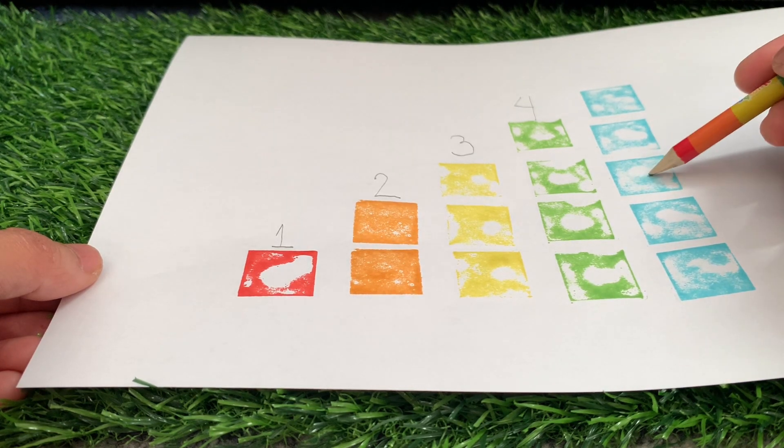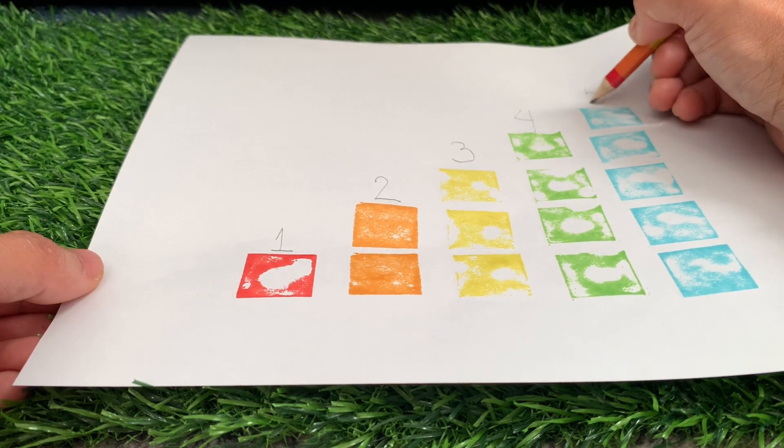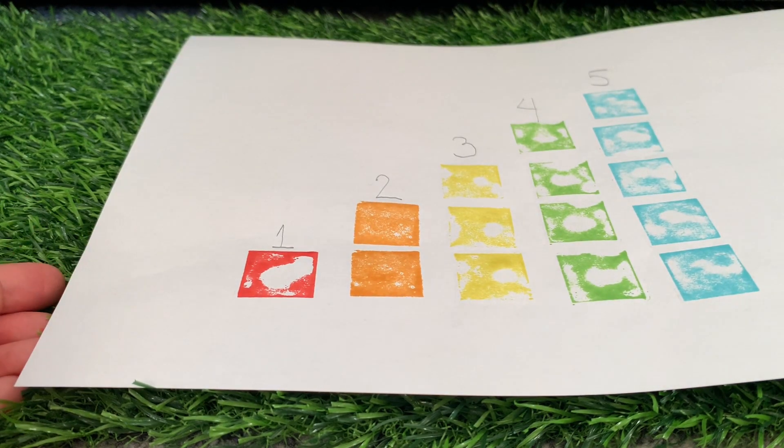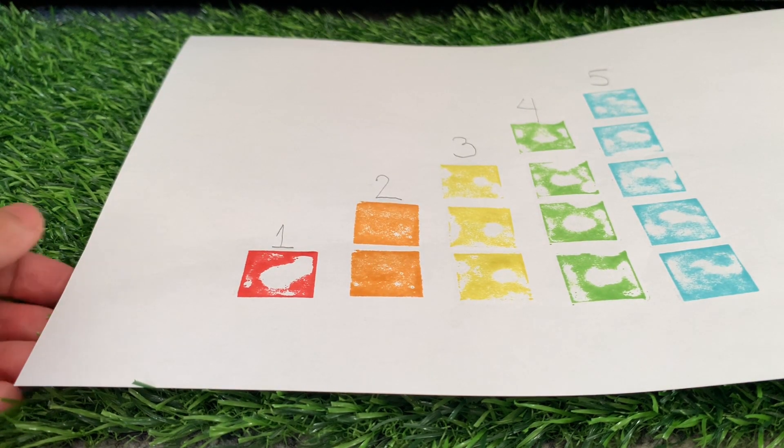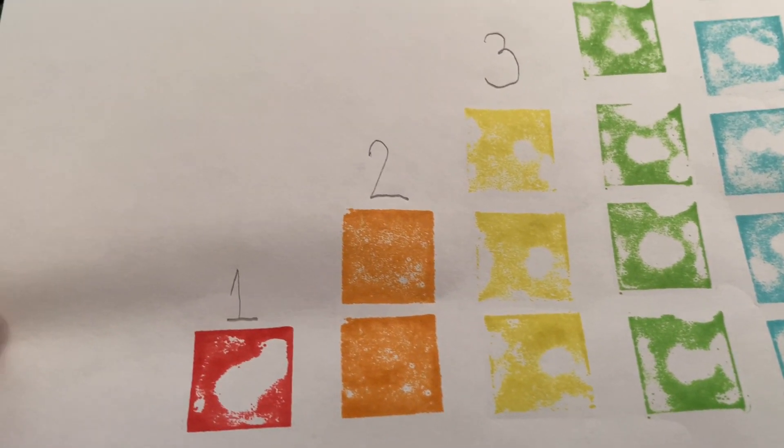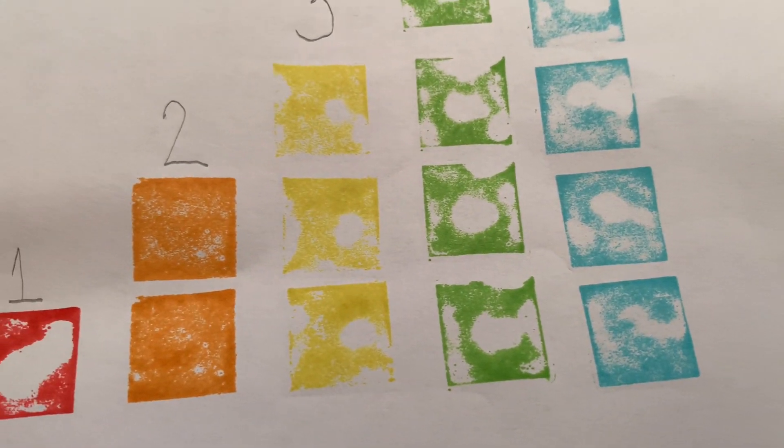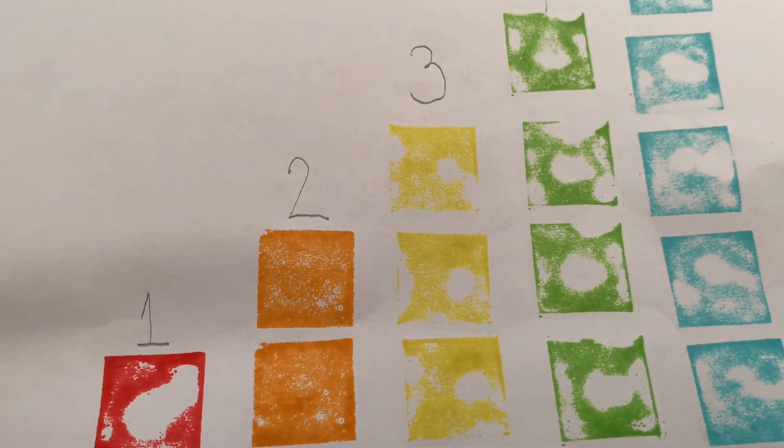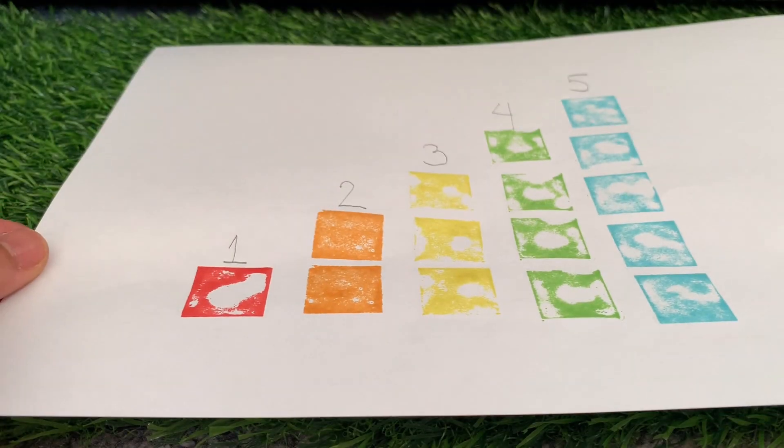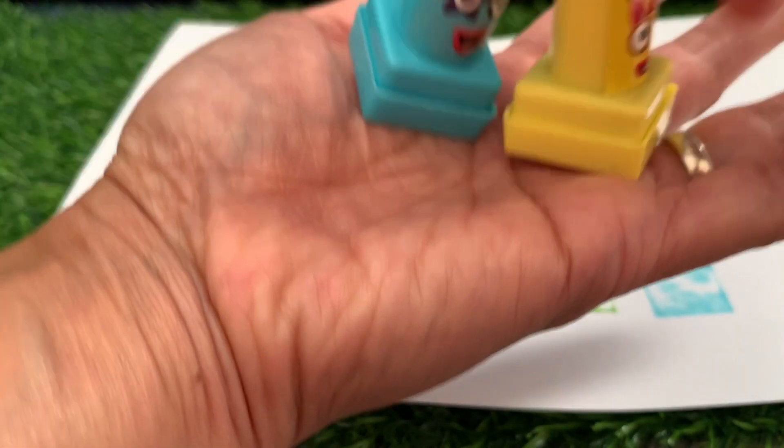Number blocks five, let's start counting. One, two, three, four, and five. And let's write number five. Cool, great job everyone. Look at this, it's really colorful, isn't it? We have red, orange, yellow, green, and blue. Number blocks one, two, three, four, and five.